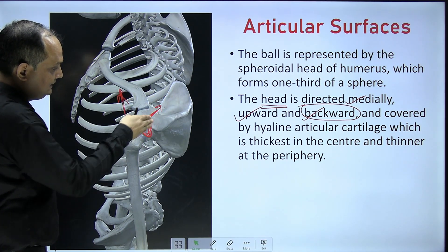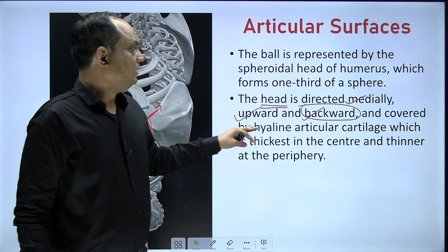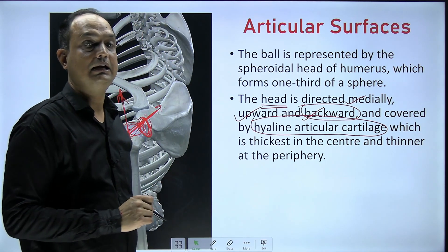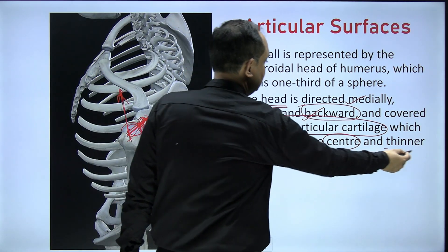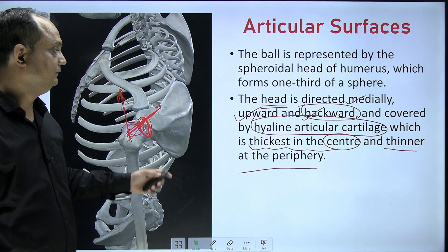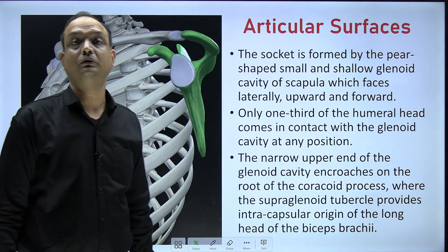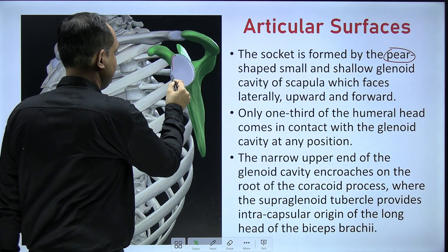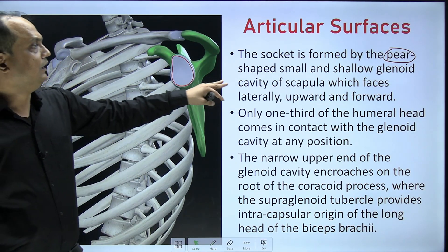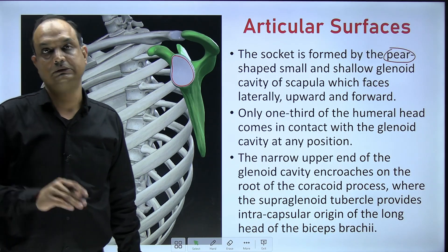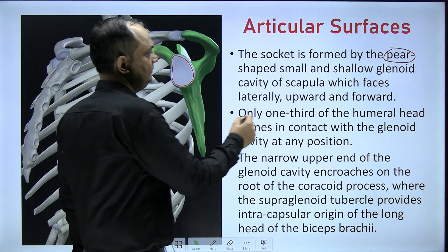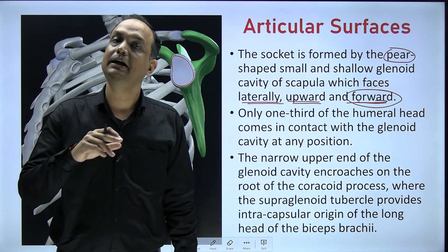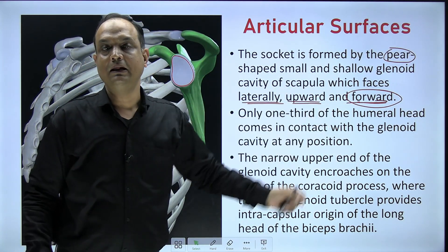The glenoid cavity is not exactly facing laterally — it faces laterally but in a forward direction. The head of humerus is covered by hyaline cartilage, which is the articular cartilage. This hyaline cartilage is thickest in the center and thinner at the periphery of the head of the humerus. The socket is formed by the glenoid cavity, which is pear-shaped. It is directed laterally, upward, and forward — while the head of humerus is directed medially and backward.